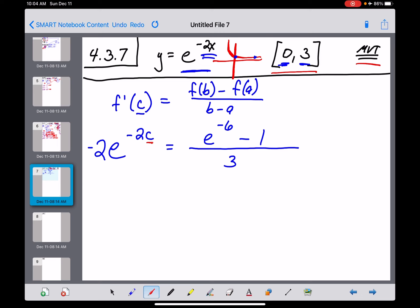So trying to solve this thing for c, the first thing we want to do is isolate the e raised to that power, which means we have to get rid of that negative 2. So I'll divide both sides by negative 2, which of course is the same thing as multiplying by 1 over negative 2, and that will cancel with that, leaving us with an e to the negative 2c power is going to equal, can't do a whole lot with this on the top, e to the negative 6th minus 1, and 3 times negative 2 gets us a negative 6 down there on the bottom.